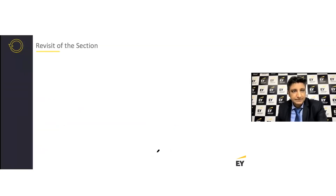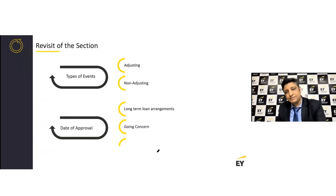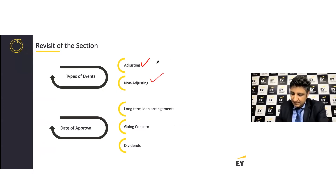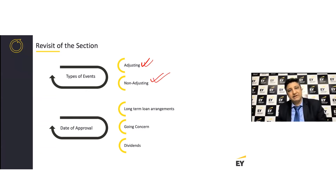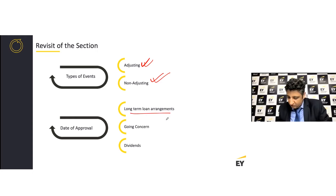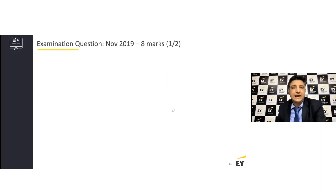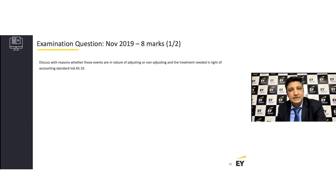To summarize: events could be either adjusting or non-adjusting. The first question is what is the meaning of an event after the reporting period. The second part is when would that event be an adjusting event and what do we do with it — and similarly what would be a non-adjusting event and how do we go for disclosures around that. Then we look at specific aspects: long-term loan arrangements, going concern, and dividends. Now this is a question tested in the examination — an eight-marks question, so plan around 14 to 15 minutes including reading, planning, and solving.